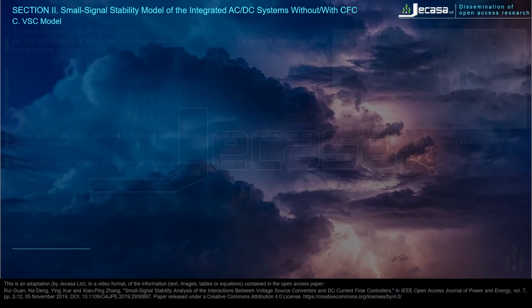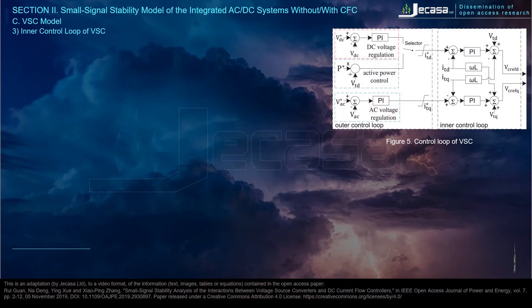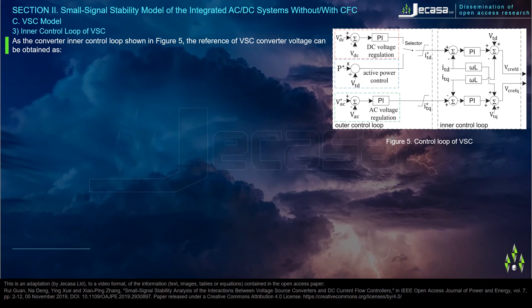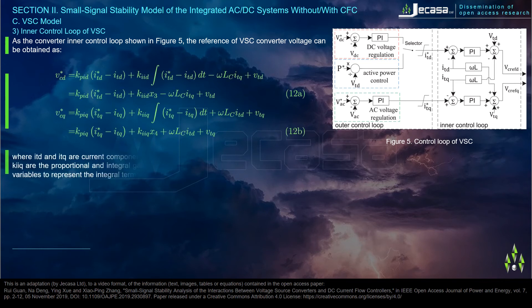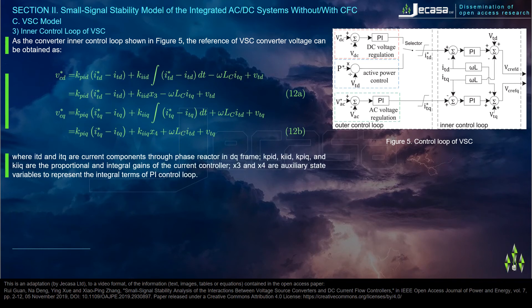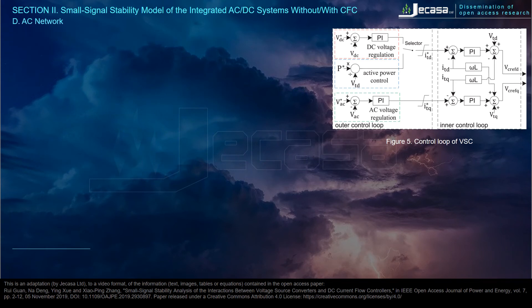Inner control loop 3 of VSC: as shown in Figure 5, the reference of the VSC converter voltage can be obtained as follows, where Itd and Itq are current components through the phase reactor in the DQ frame; Kpid, Kiid, Kpiq, and Kiiq are the proportional and integral gains of the current controller; and x3 and x4 are auxiliary state variables representing the integral terms of the PI control loop.